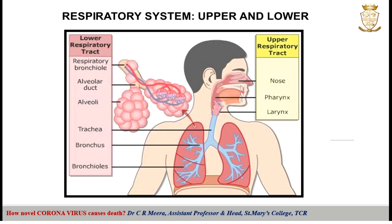Our respiratory system consists of a series of organs and is divided into the upper respiratory tract and lower respiratory tract. The upper respiratory tract consists of nostrils, pharynx, and larynx. The parts below the larynx are called the lower respiratory tract, which includes the trachea, bronchi, bronchioles, alveoli, and lungs.